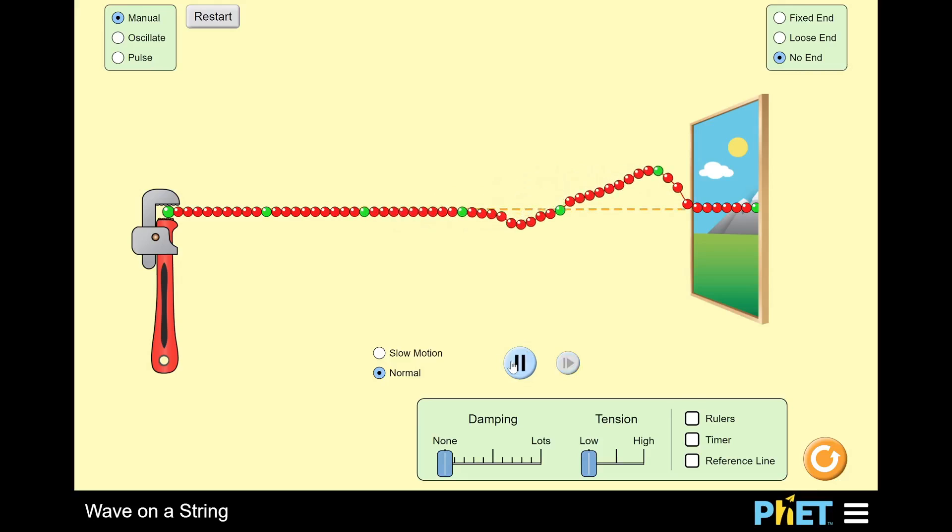If I let the time go a little bit more, then we see this. Now we pause it again, and now we see that the wave looks a little bit different. It's actually the same shape of pulse, but it's moved over to the right.